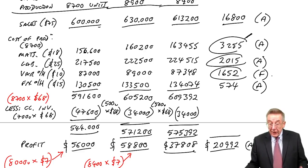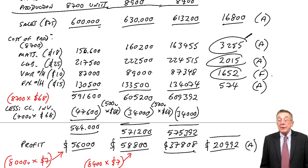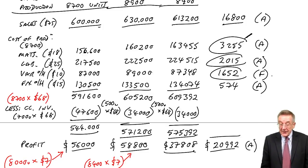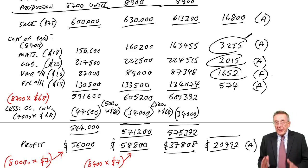Alright, this is the third lecture on chapter 24 of the paper F2 free lecture notes on variance analysis. Remember in the first lecture, we did the flexed budget, which is on the screen now, and looked at the total variances.